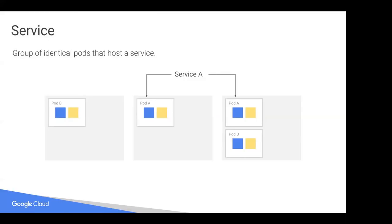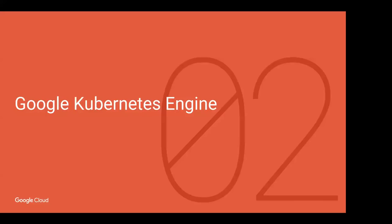The final object I want to mention is called a service. A service is simply a group of identical pods hosting, say, an HTTP front end or back end. As those pods can be anywhere in your cluster, the service abstraction gives you a single point to reference, and Kubernetes will figure out where to route traffic.